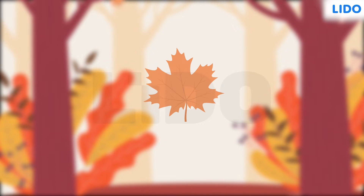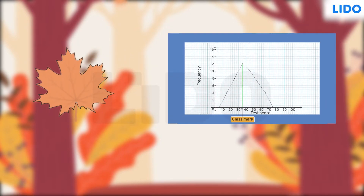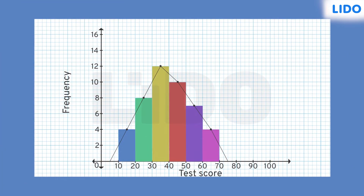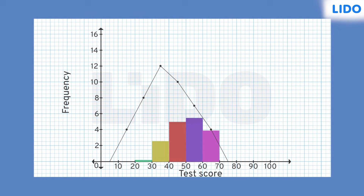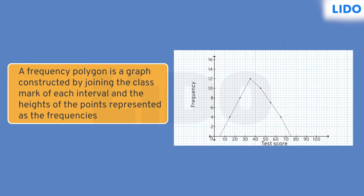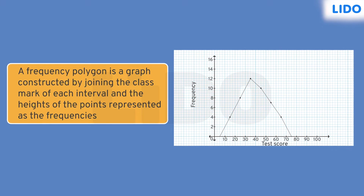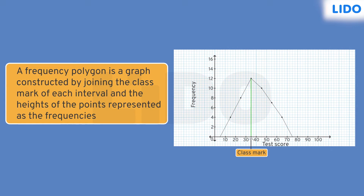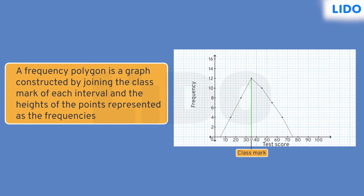But among all, the serrated edges of maple leaves have caught my attention. These edges remind me of a similar concept in statistics where different points are joined together to form a frequency polygon. A frequency polygon can be drawn by using a histogram or without using the histogram. A frequency polygon is a graph constructed by joining the class mark of each interval and the heights of the points represented as the frequencies.